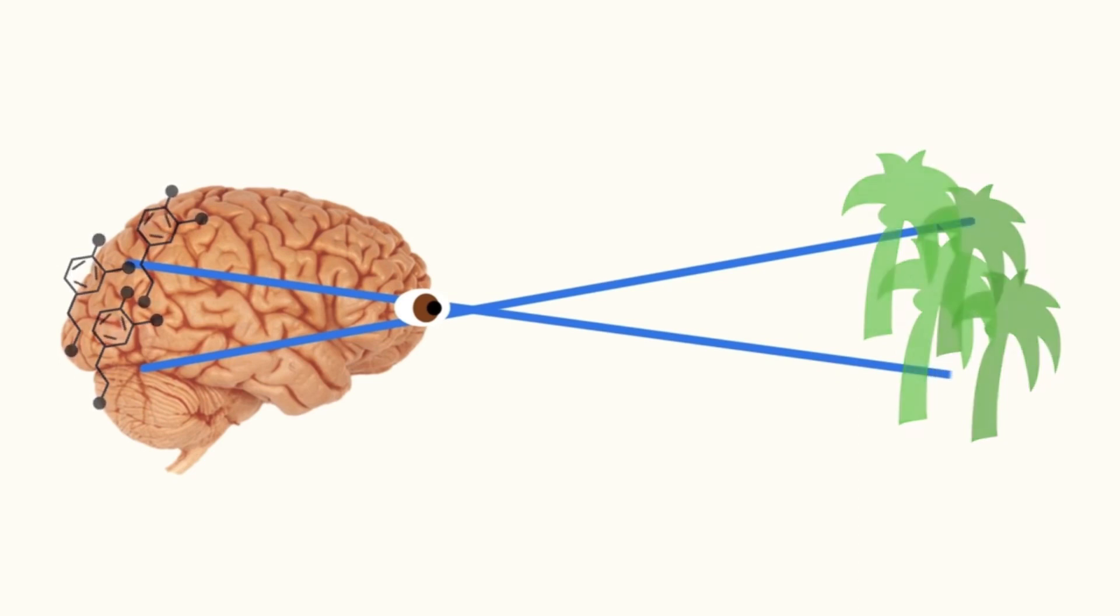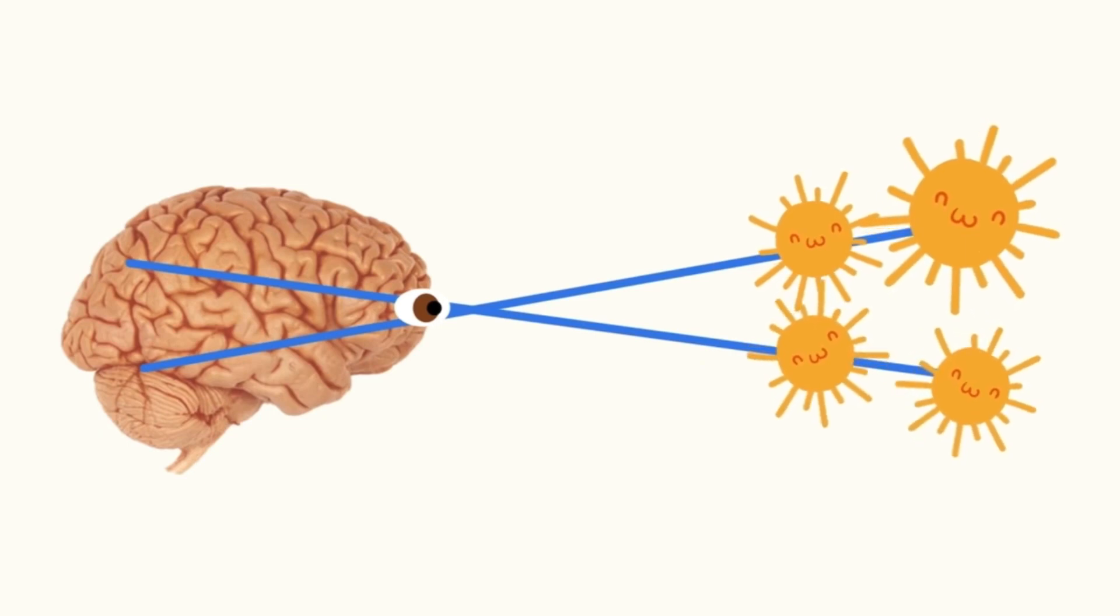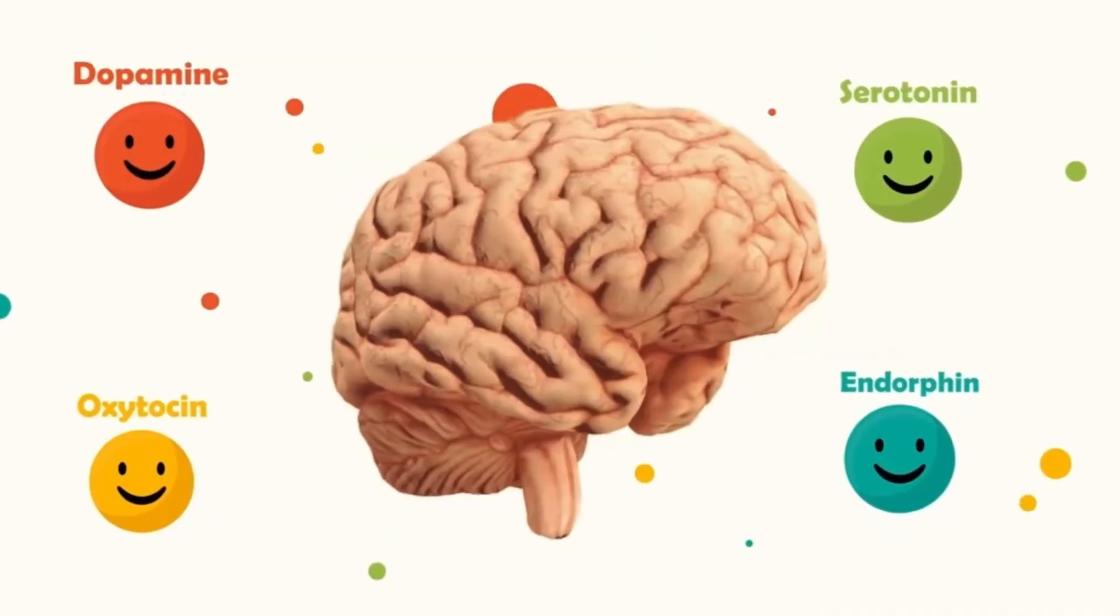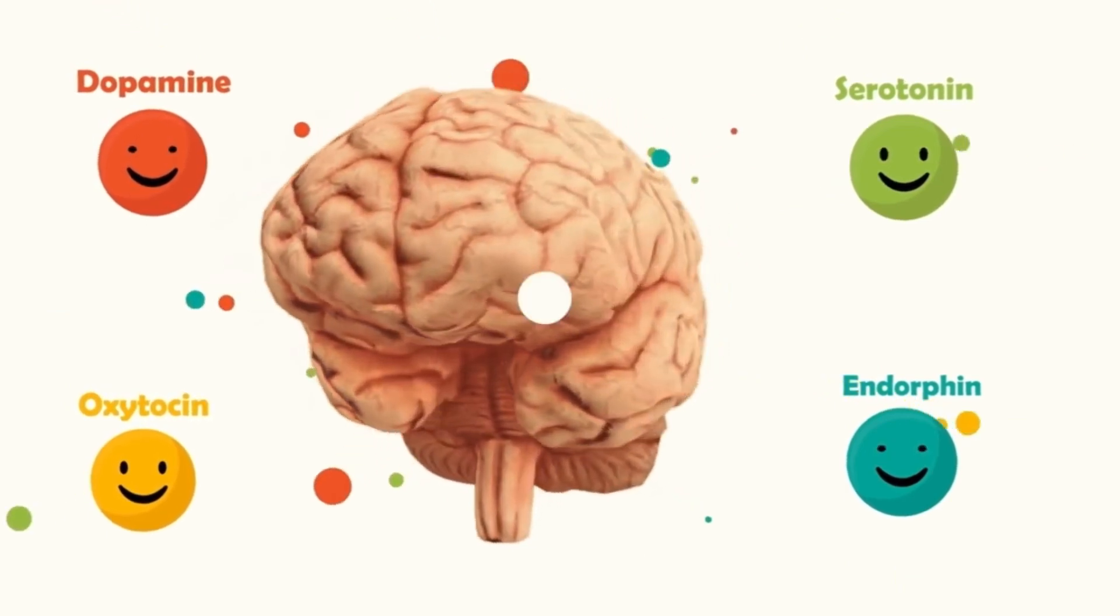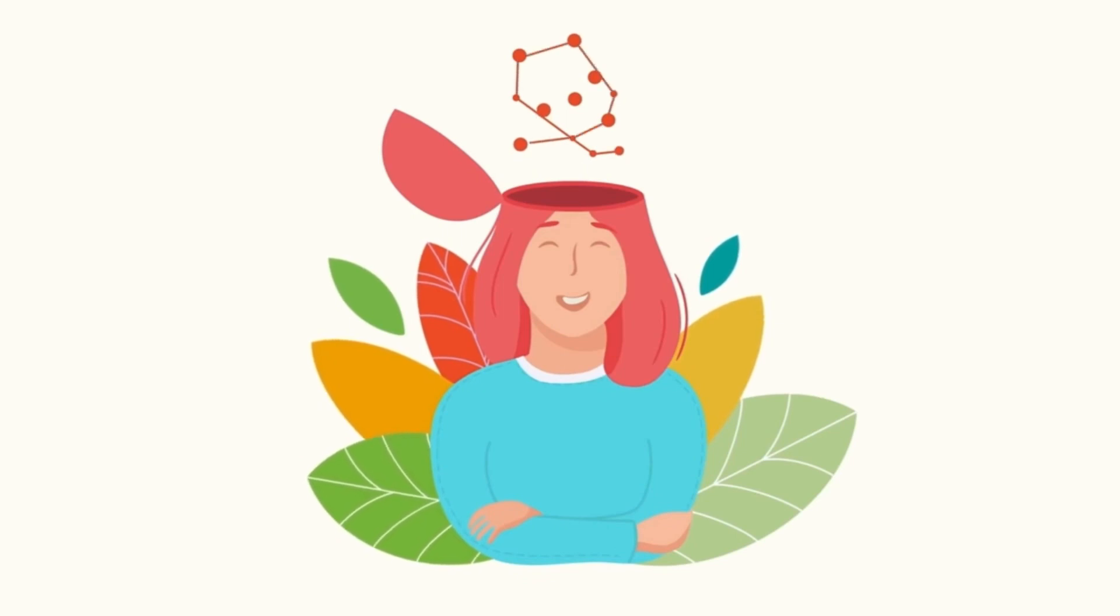You can build new dopamine pathways to turn it on in new ways, but it takes a lot of repetition. Serotonin, oxytocin, and endorphin have their own jobs to do.